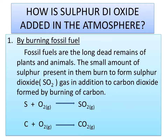How is sulphur dioxide added to the atmosphere? There are many ways by which sulphur dioxide reaches the atmosphere. By burning fossil fuels: fossil fuels are the long dead remains of plants and animals. The small amount of sulphur present in them burns to form sulphur dioxide gas, in addition to carbon dioxide formed by burning of carbon. The equations are: S + O₂ → SO₂ and C + O₂ → CO₂.